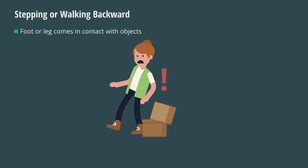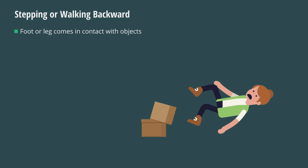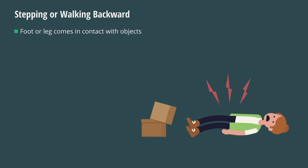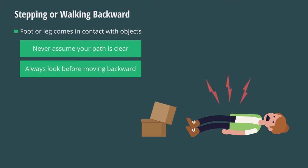The simple act of stepping backward away from a workstation has caused severe injury when someone inadvertently placed an object on the floor behind an operator of a machine. Never assume your path is clear. Always look behind you before moving backward.